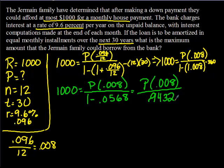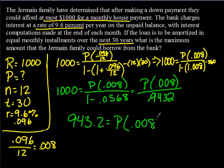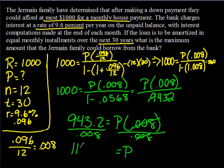Dividing both sides by 0.008, we get P equals $170,900. That's the maximum amount the Germain family can borrow if they can afford $1,000 for monthly payments.